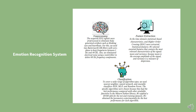Pre-processing: the acquired EEG signals were pre-processed to eliminate body-generated artifacts such as blinking eye and heartbeat. For this, we used two Butterworth IIR filters with zero phase to keep frequencies between 1 Hz and 40 Hz. Also, we eliminated electrical noise using a notch filter to delete 60 Hz frequency components. Feature extraction: in the time domain, statistical-based characteristics and high-order crossings were extracted. We selected essential features that contain the most relevant characteristics of the signal, i.e., mean and variance.